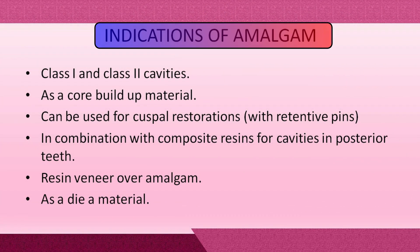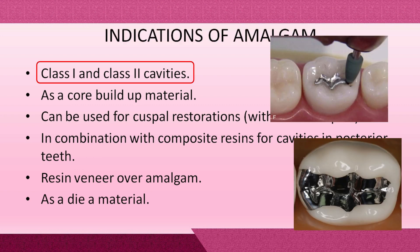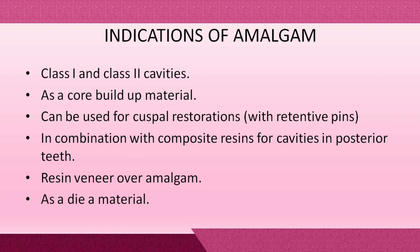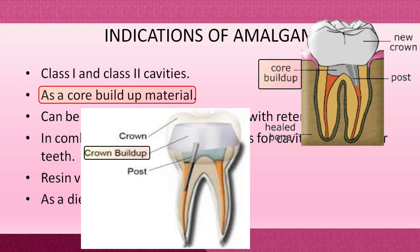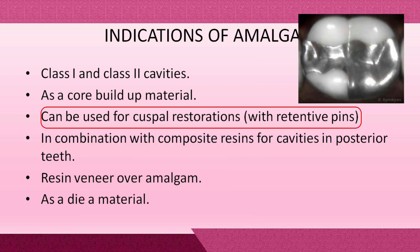Dental amalgam is indicated in Class 1 and Class 2 cavities in the posterior teeth, where it lasts very long. Dental amalgam is also used as a core build-up material, over which a crown made from any material can be placed.